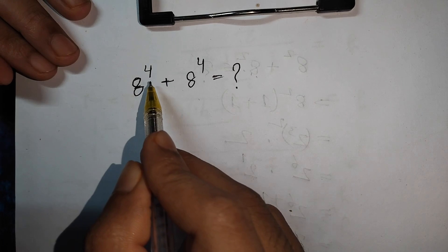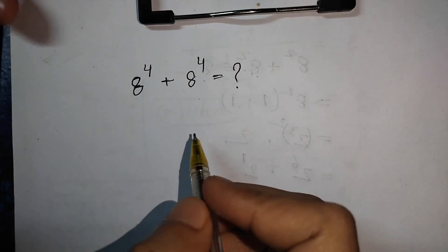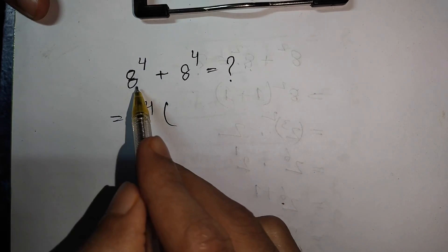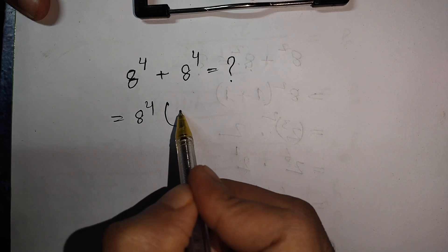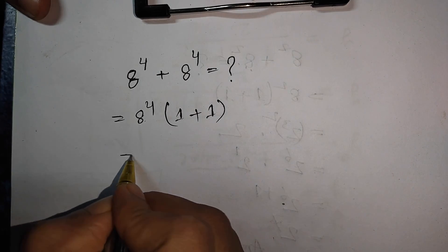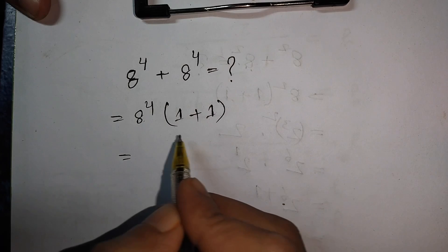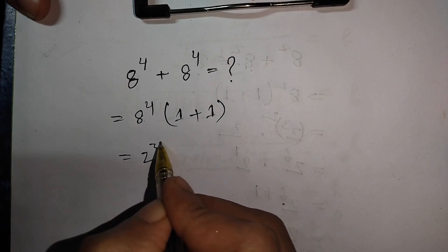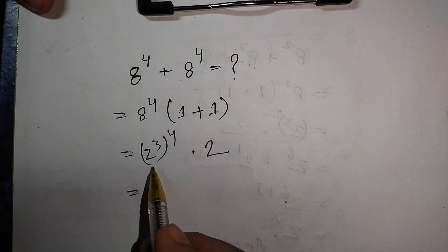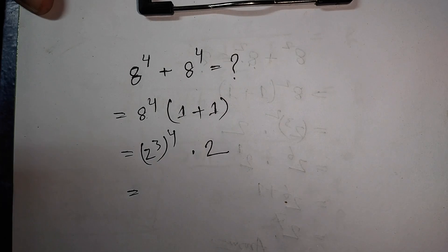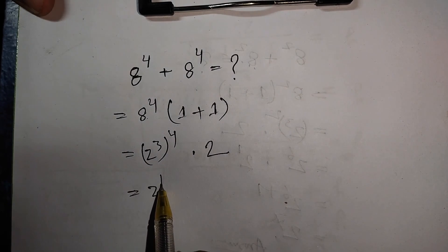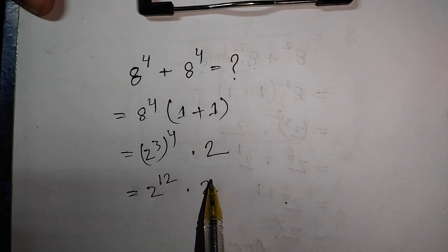Now, how to simplify: 8 to the power 4 times 2. First, rewrite 8 to the power 4 as 2 to the power 3, bracket raised to the power 4, which equals 2 to the power 12. So we have 2 to the power 12 times 2 to the power 1.